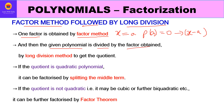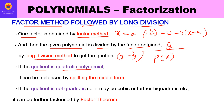The given polynomial is then divided by this factor using long division, making the polynomial the dividend and the factor the divisor. The quotient we get will be a quadratic polynomial, which is then factorized using splitting the middle term. If the quotient is not quadratic, we repeat the factor theorem method.